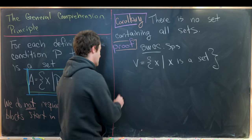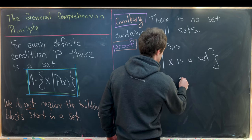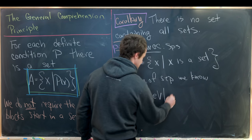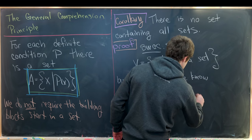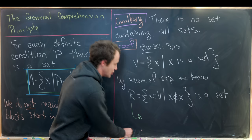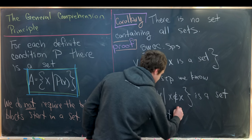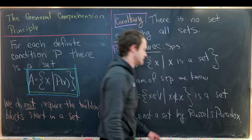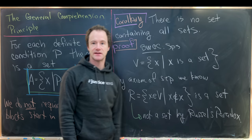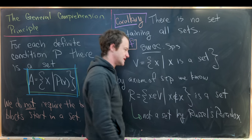But now let's notice by the axiom of separation, we know that r, which equals x in v such that x is not an element from x, is a set. But this thing r is exactly what we showed is not a set by Russell's paradox. So let's just reiterate that: not a set by Russell's paradox. So we've hit a problem. So if we have a set of all sets, then this thing r is a set. But then by Russell's paradox, this thing is not a set. So like I said, we just reached a contradiction.